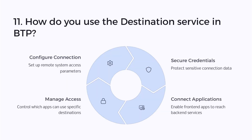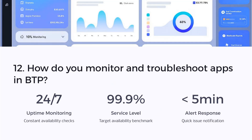Question eleven: How do you use the Destination Service in BTP? The Destination Service is super helpful. I configure destinations to securely connect to remote systems. For example, I've used it to call a backend service from a UI5 app without exposing sensitive data in the front end.